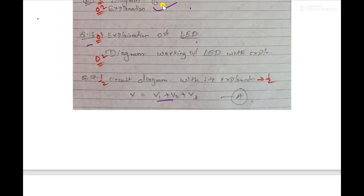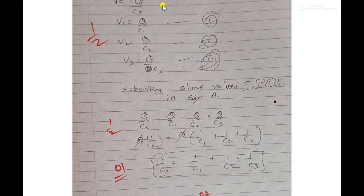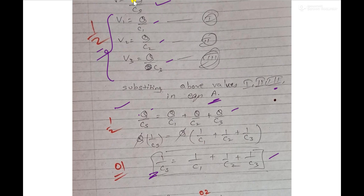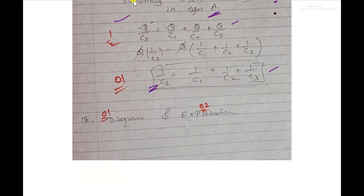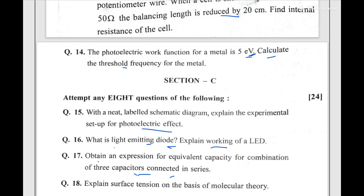Question number 16: explain the LED — draw the LED diagram. This equation carries marks. Then to obtain the result for series parallel combination, use the formula. The equation carries marks — write each point for half marks, and substitute the values to get the final answer, which carries one mark.